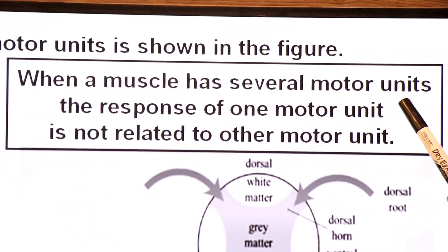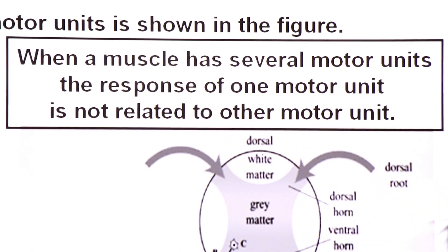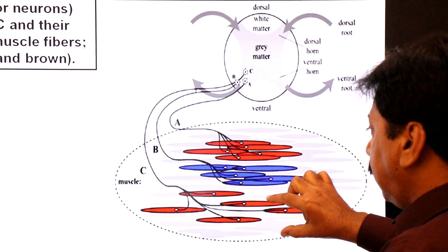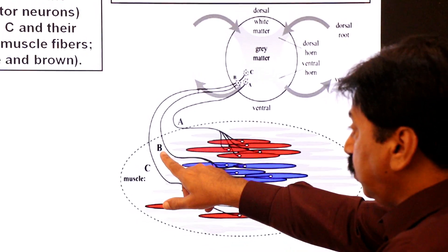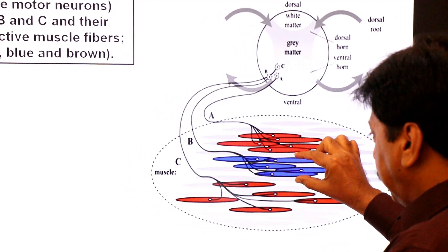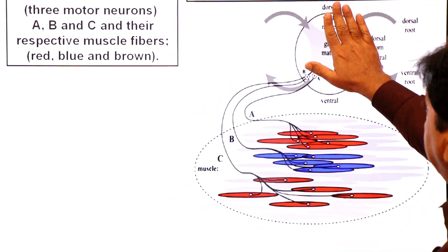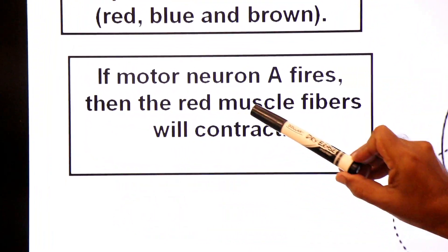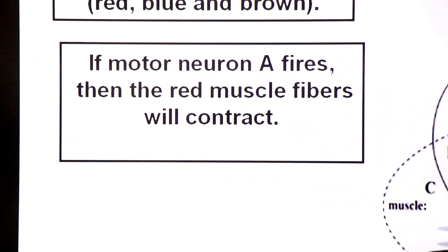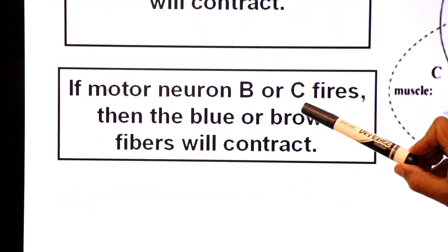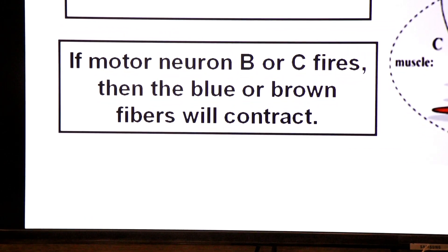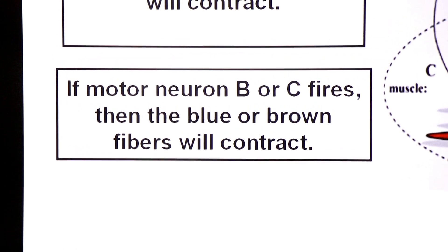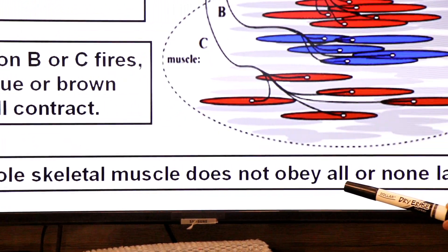When a muscle has several motor units, the response of one motor unit is not related to another motor unit. If motor neuron A fires, only the red fibers will contract — not the blue or brown. If motor neuron B fires, only the blue fibers will contract — not the red or brown. That is why the whole skeletal muscle does not obey All or None Law.